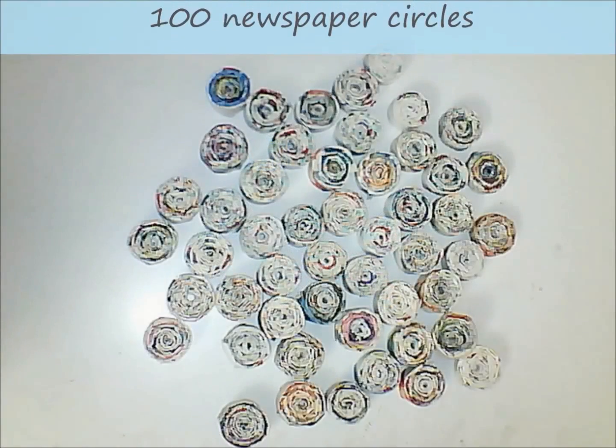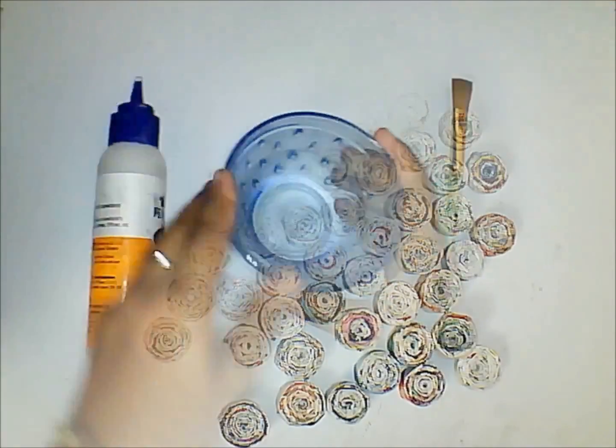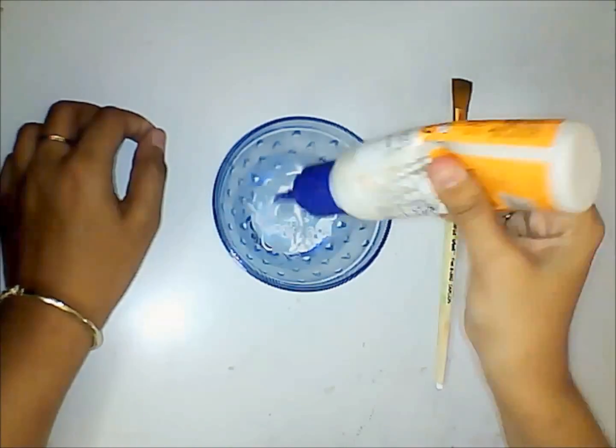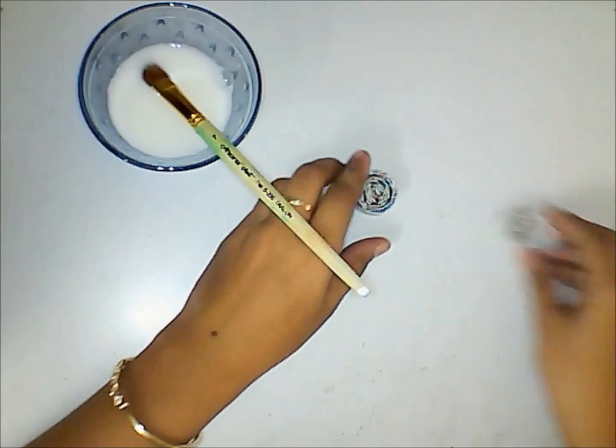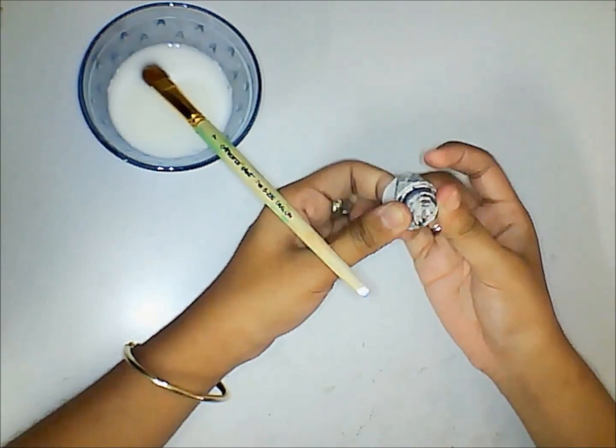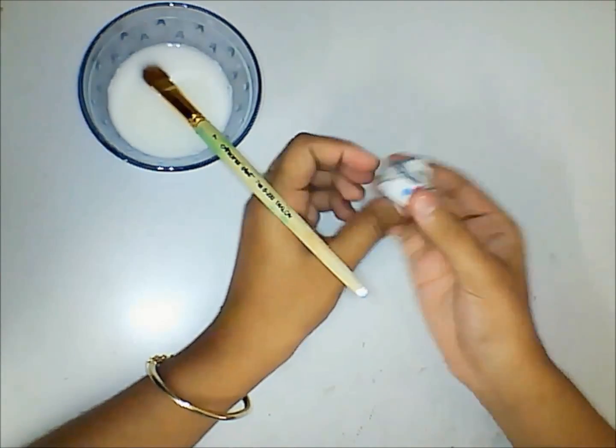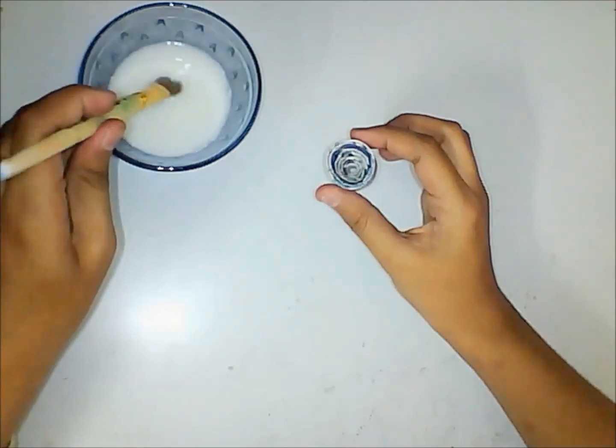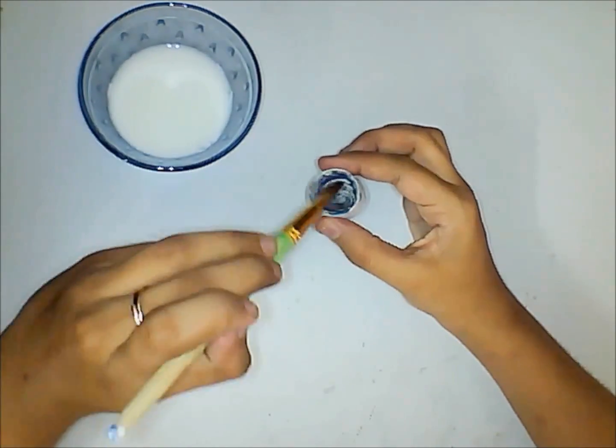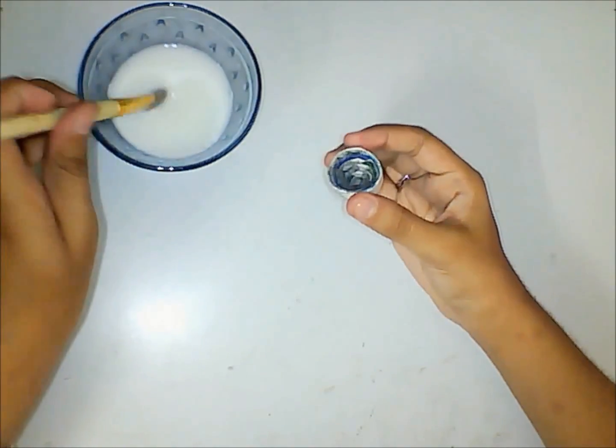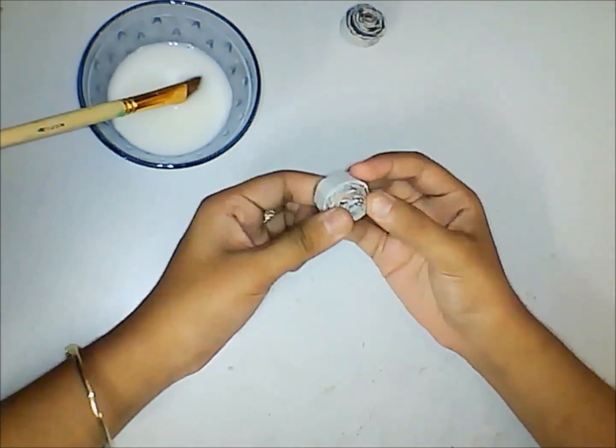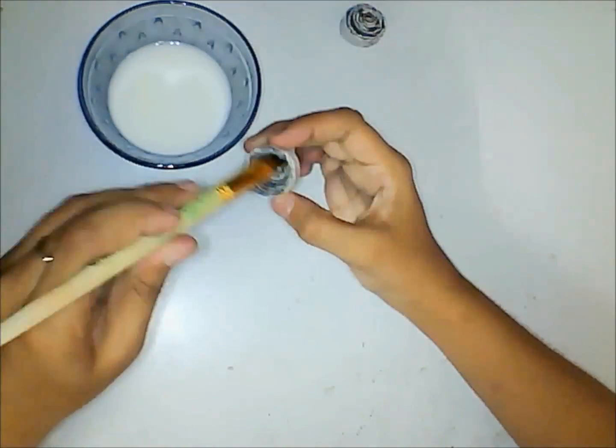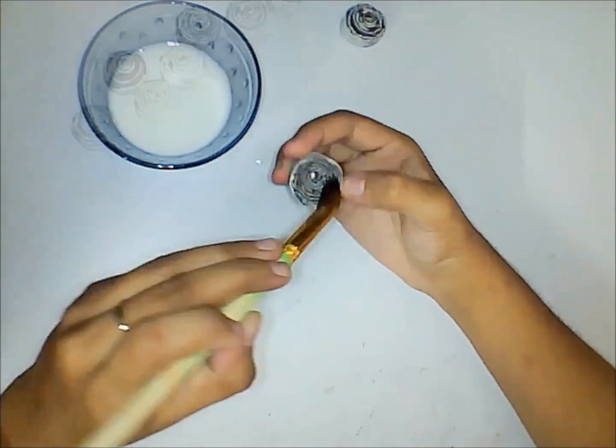You should make 100 such circles for this project. Take some water into the bowl and add glue to that water. Make sure that glue is more than water and mix it well using a paintbrush. Take the newspaper circle, push it from inside to get a dome shape. Now let us make this shape secure by applying this glue mixture towards the inner side. Repeat the same steps for all the remaining newspaper circles, so finally you will have 100 such dome-shaped newspapers.